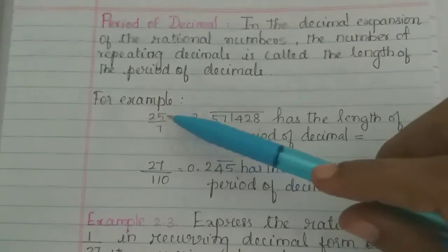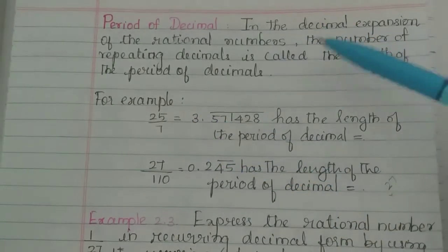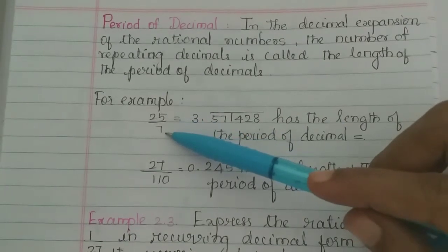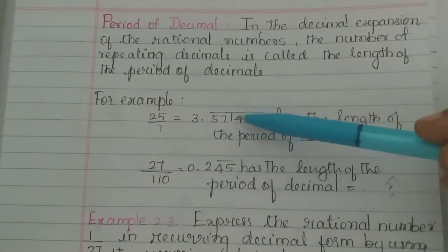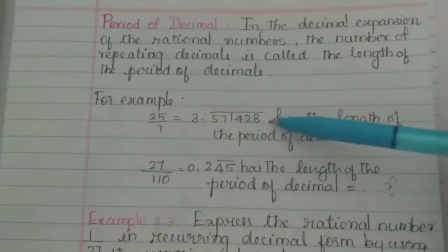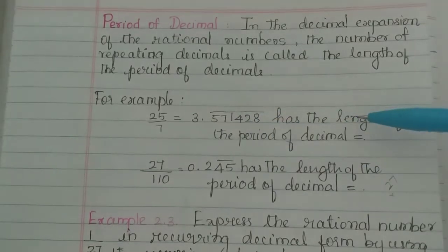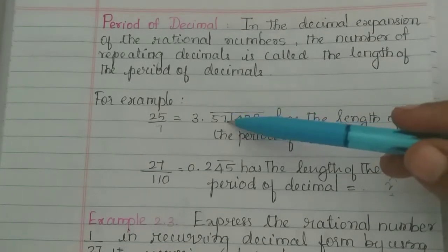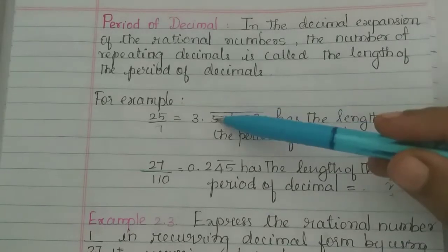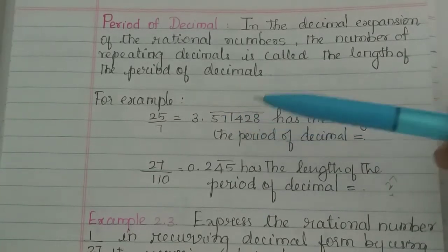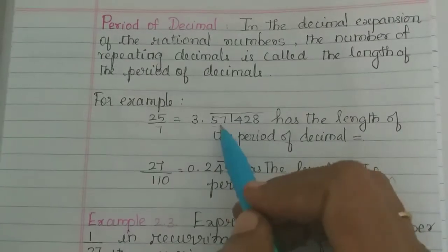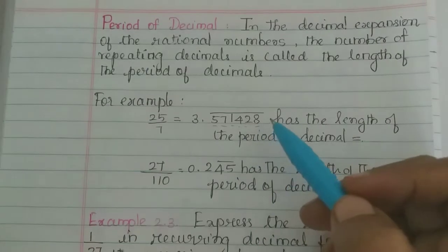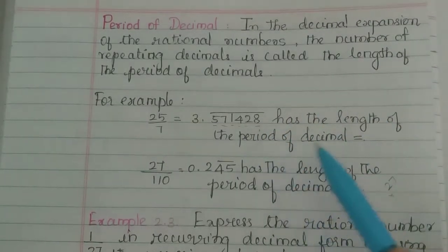Now we will look at the decimal expansion. For example, dividing to get 3.571428, again 571428 repeating. So what number is repeated? 1, 2, 3, 4, 5, 6 — six numbers are repeated. What is this called? The length of the period of decimal.